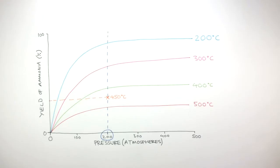When we look at this graph, we can see if 200 degrees Celsius was used, the yield of ammonia would be nearly 100 percent. However, this temperature would result in a rate of reaction that would be too low.